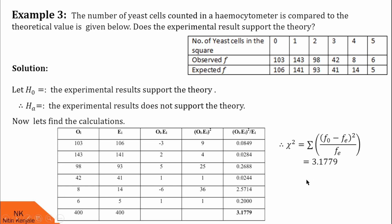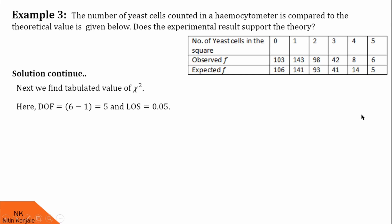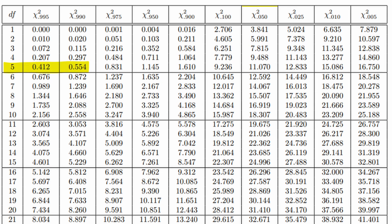Guys, you can pause the video and check these calculations. Now, let us proceed for the tabulated value. For the tabulated value, we will take degrees of freedom as 6 minus 1 is equal to 5, because there are 6 data values and this is single categorical data. Therefore, degrees of freedom here will be 5. We will take 5% LOS. So, we found the tabulated value of chi-square at 5 degrees of freedom and 0.05 LOS is 11.070.